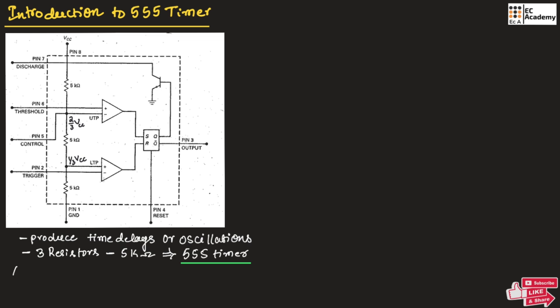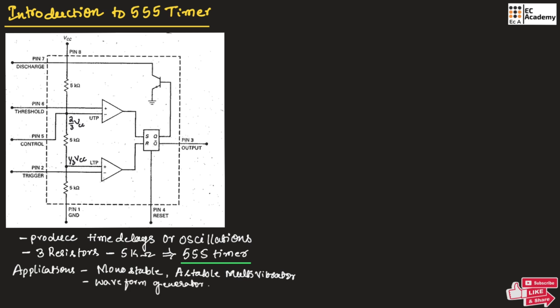The major applications of the 555 timer are: it can be used as a monostable or astable multivibrator, as a waveform generator, for DC to DC conversion, as a voltage regulator, and also as an alarm.